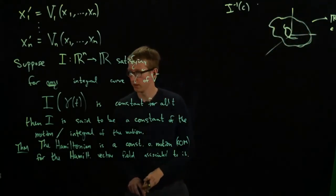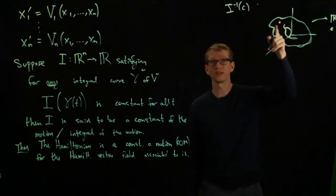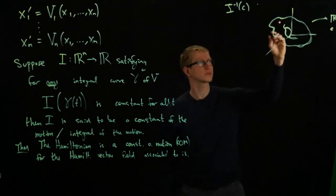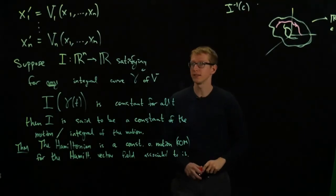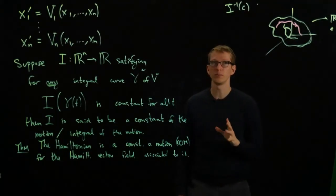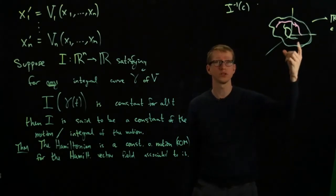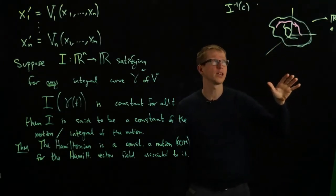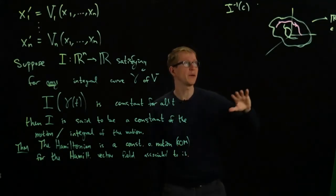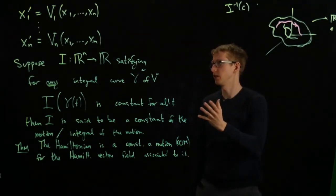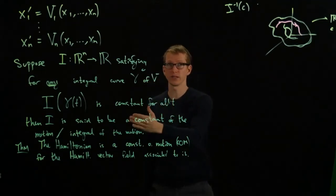And the fact that this is a constant of the motion tells us that if I have any curve that passes through a point on this subset, then that entire curve lies on this entire subset. So what a constant of the motion does is it reduces a problem for us. It reduces the problem of calculating n differential equations in n variables to calculating differential equations of fewer variables. But the complication arises that these fewer variables might sweep out a non-trivial domain.